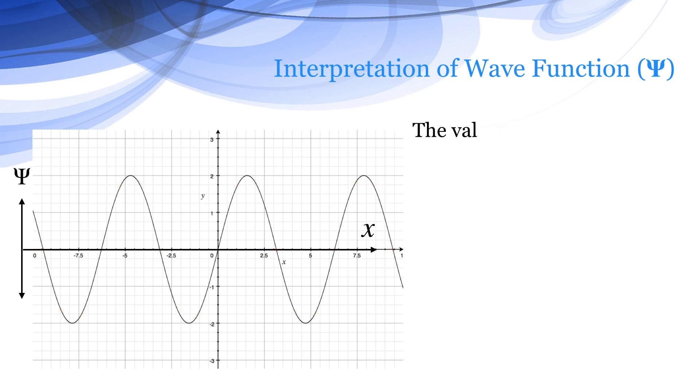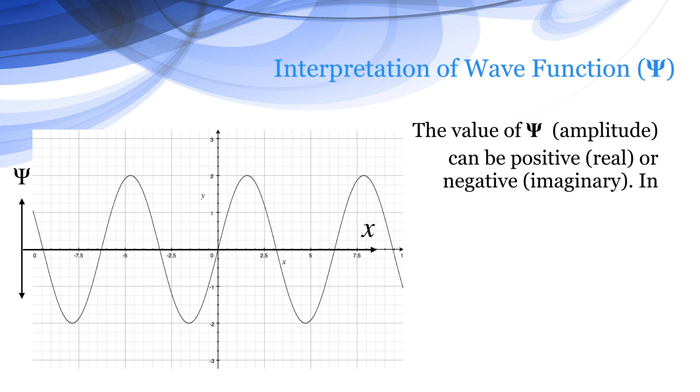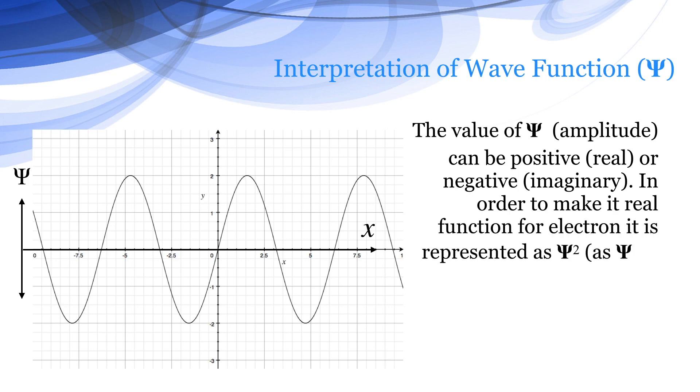The value of Ψ, the amplitude, can be a positive real number or negative imaginary number. In order to make it a real function for the electron, it is represented as Ψ². As Ψ² is always positive or a real number.